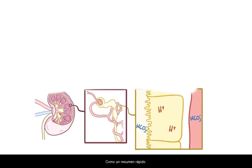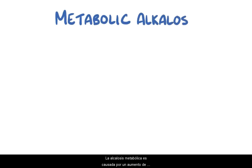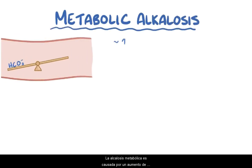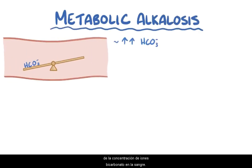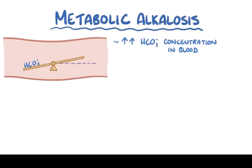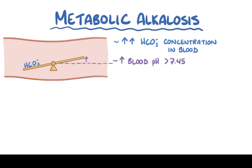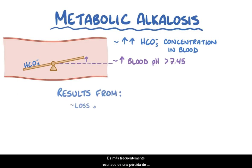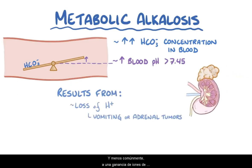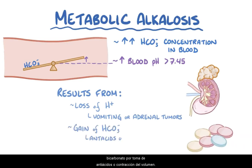As a quick recap, metabolic alkalosis is caused by an increased bicarbonate ion concentration in the blood that elevates blood pH above 7.45. This most frequently results from loss of hydrogen ions due to vomiting or adrenal tumors, and less commonly from a gain of bicarbonate ions from antacids or volume contractions.